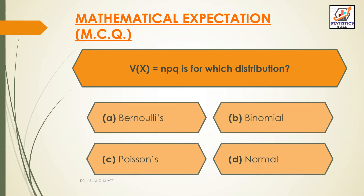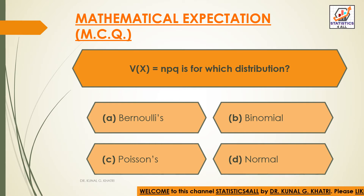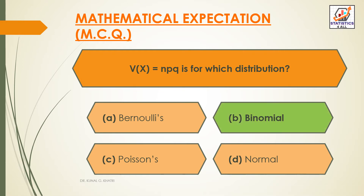Variance of x equal to NPQ is for which distribution? Option A — Bernoulli's; Option B — Binomial; Option C — Poisson; Option D — Normal. The answer is Option B: Binomial. V(x), that is variance equal to NPQ, is for the binomial distribution.